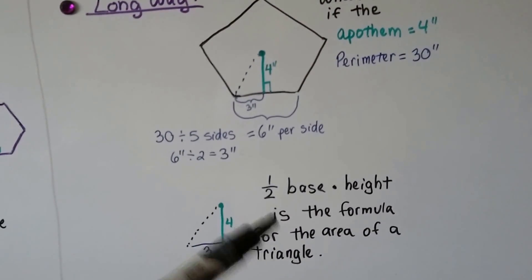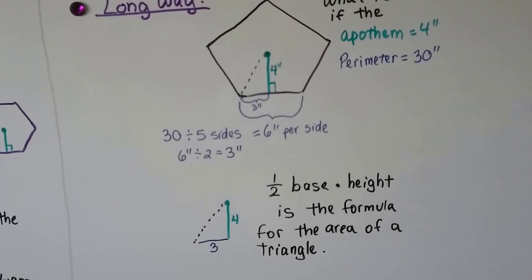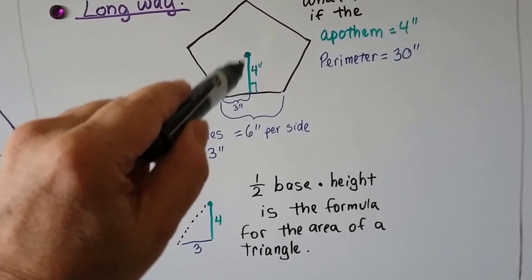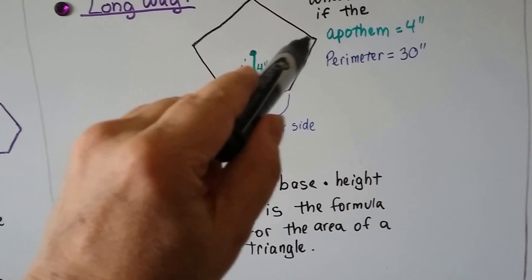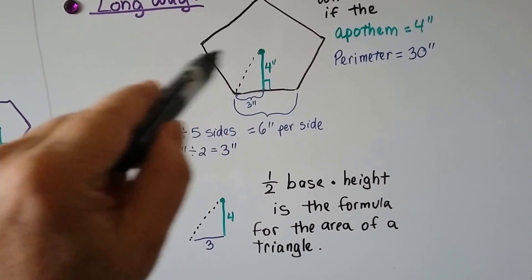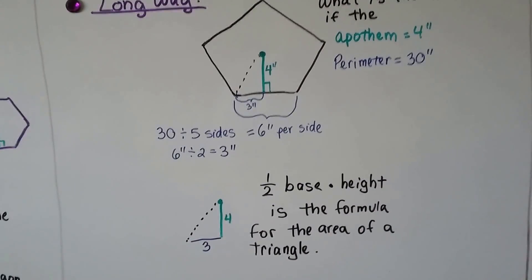And half base height is the formula for the area of a triangle. So we could find this area and then find all the other little triangles that are in here and add them together, couldn't we? We could multiply it by that many.